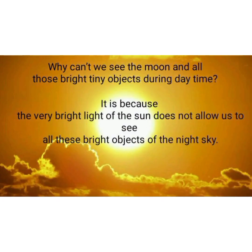Have you ever wondered why we can't see the moon and those bright tiny objects during the day time that we are able to see at night — the moon, the stars, and the tiny shining objects in the sky? The answer is simple: because of the Sun. The Sun has very bright light and that brightness does not allow us to see other objects visible during night time.